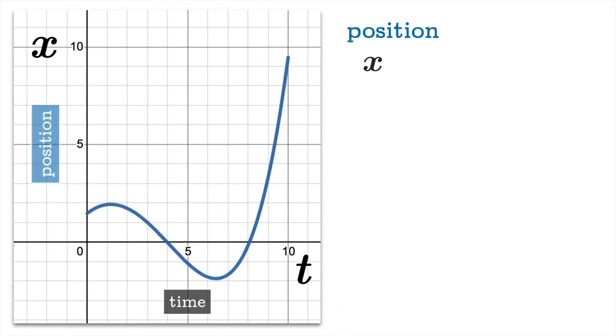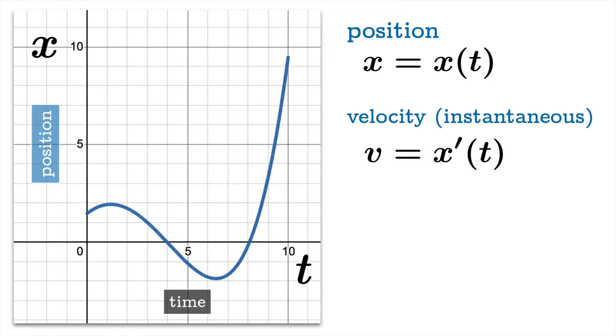So what's going on? The position is a function of t and assuming it's differentiable we can look at the velocity, the instantaneous velocity, which is the rate of change of position with respect to time, the derivative of x with respect to t.